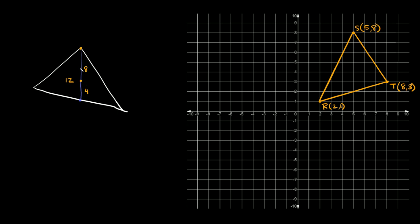Another way to find the centroid is to start at one vertex and draw a straight line to the middle of the opposite side. You can do that with all the other vertices too. Start at this vertex and draw a straight line to the middle of this segment, and the same thing with this one — start here and draw a straight line to the middle of the last side. Where all three lines intersect is the centroid.